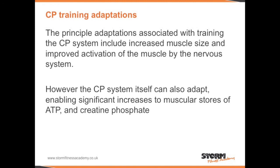The CP system also experiences some training adaptations. The principal adaptations include increased muscle size and improved activation of the muscle by the nervous system. However, the CP system itself can also adapt, enabling significant increases to muscular stores of ATP and creatine phosphate.